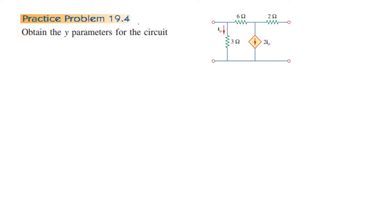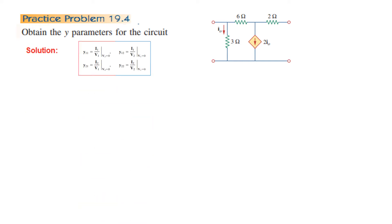Let's go straight to the question: practice problem 19.4. We have to obtain the Y parameters for this circuit. Following the formula, we will first attempt to find Y11 and Y21, and for that we have to make V2 equal to 0. So this end is V2, we have to short circuit it and connect a current source at the left hand side.